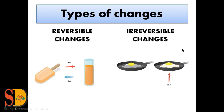Now we have the types of changes on the basis of reversibility. First we have reversible change and second irreversible change. For a reversible change, when we take ice cream and heat it, it completely changes into liquid form, and if we again cool it, we get our ice cream back. So in this change, we get our original substance back. For an irreversible change, we put an egg yolk in a pan and when we heat it, the shape and texture of the egg is completely changed, and we cannot get our egg back. So this is an irreversible change in which we cannot get our original substance back.